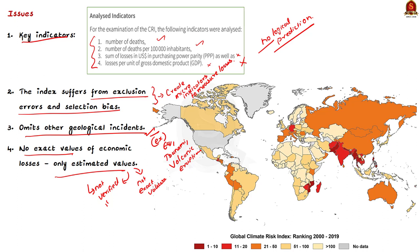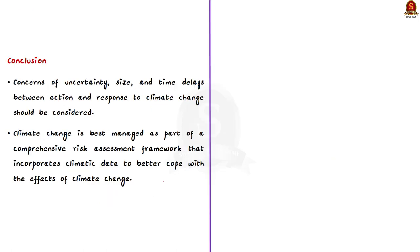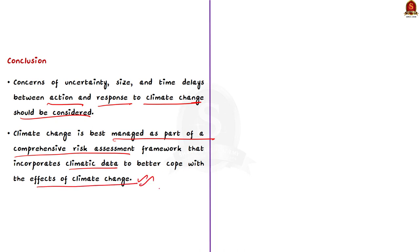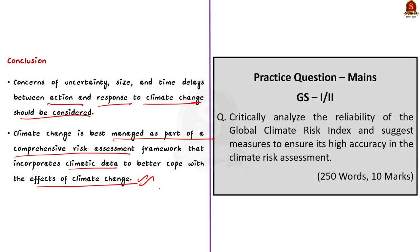Without taking into consideration concerns of uncertainty, size, and time delays between action and response to climate change, any discussion of climate risk management and measurement will not be complete. Therefore, climate change can best be managed as part of a comprehensive risk assessment framework that incorporates climate data to better cope with the effects of climate change. The four flaws in the Global Climate Risk Index can also be addressed for more effective climate risk assessment.